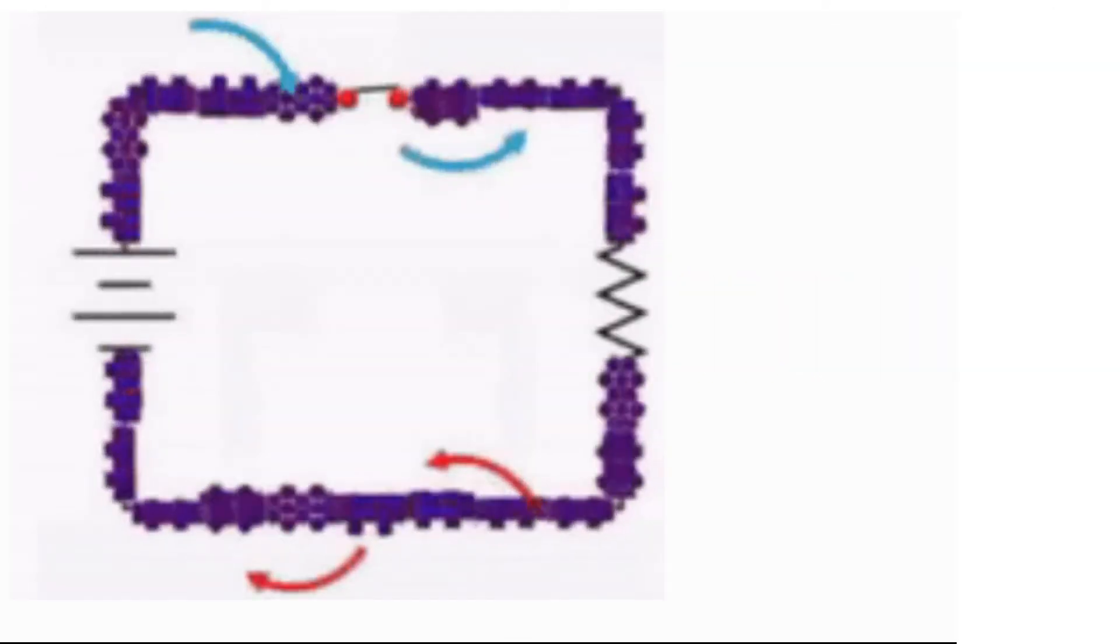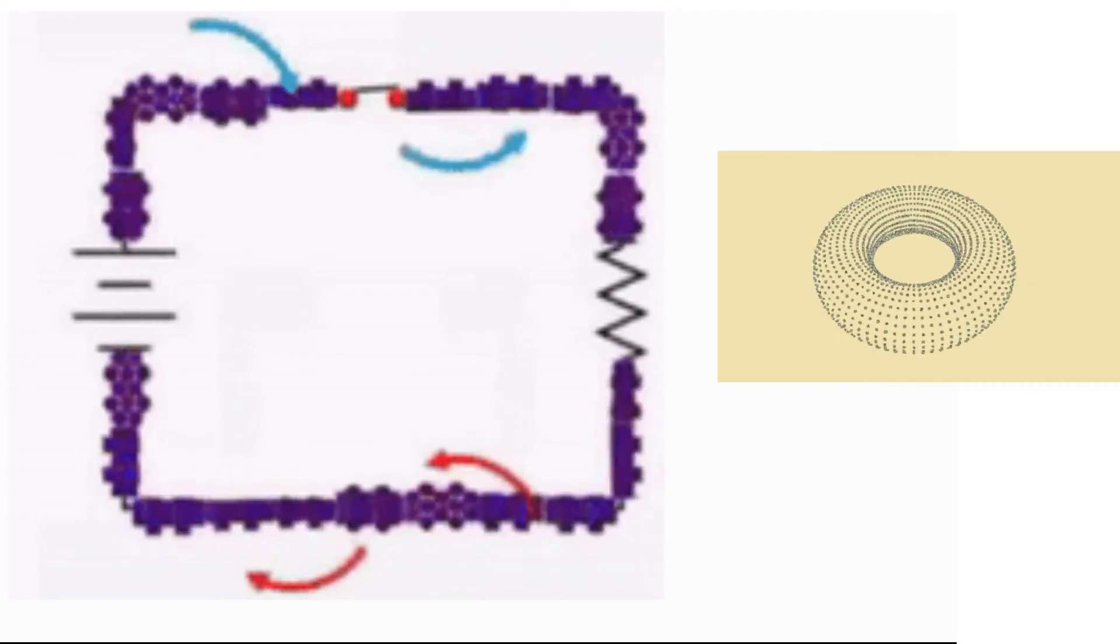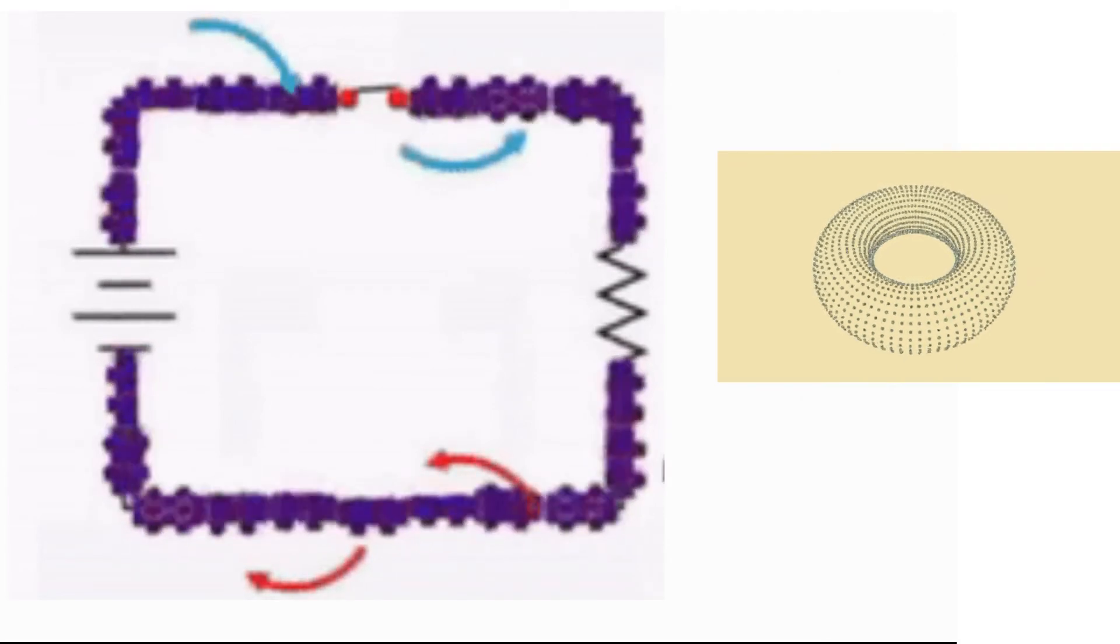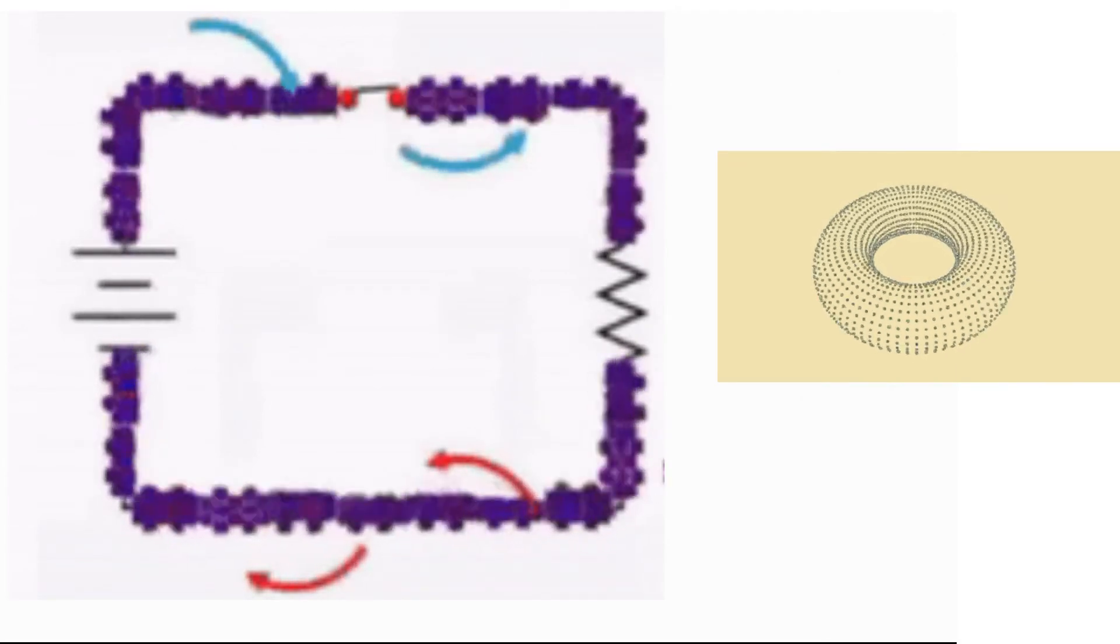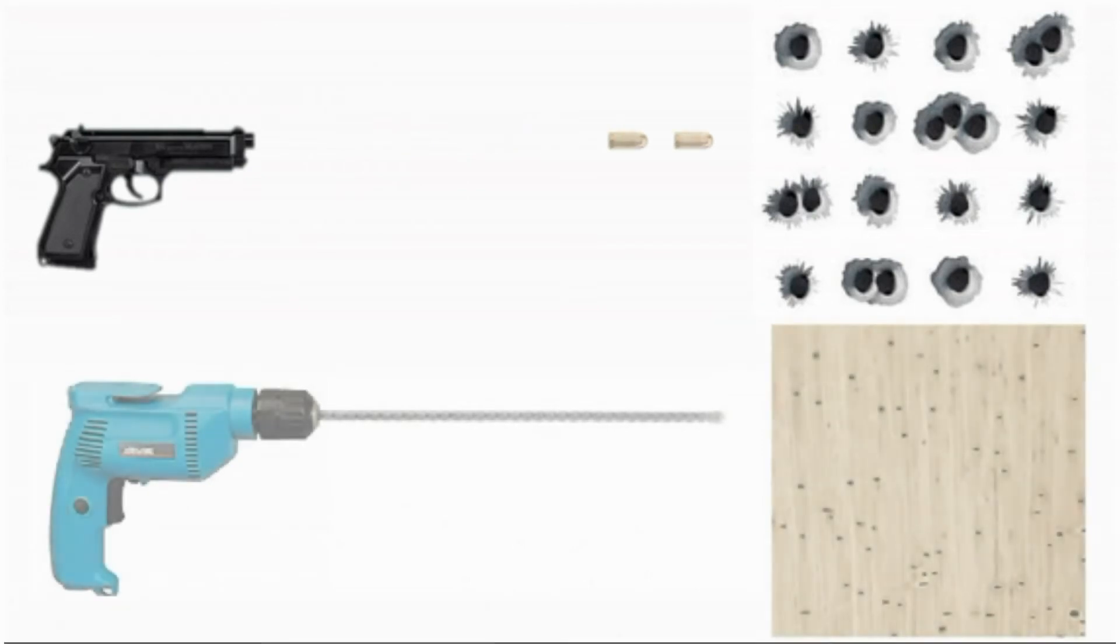A closed circuit resembles a doughnut turning on itself along its entire extension. Electricity is not the shooting of bullets. Electricity is more appropriately visualized as a drill bit twirling in place.